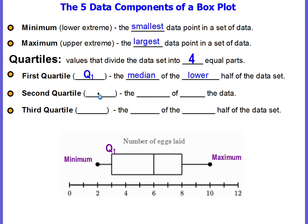The second quartile, known as Q2, is the median of all the data. A lot of times it's called Q2 or second quartile, but it's the line that's inside of the box. It's also just called the median. You will actually see it referred to as the median more often than quartile two, but you need to know that it's both.